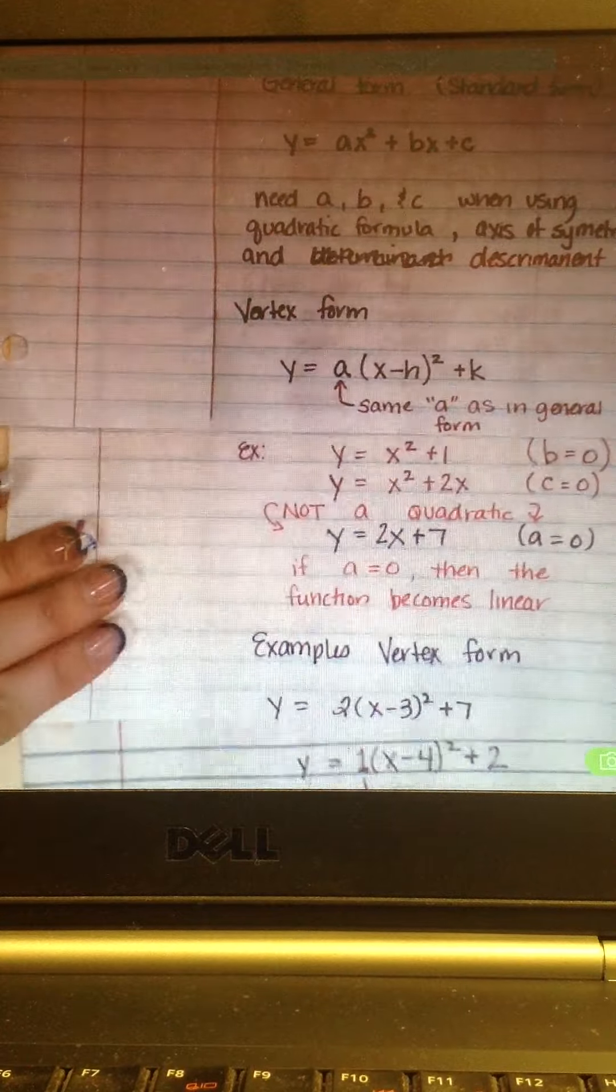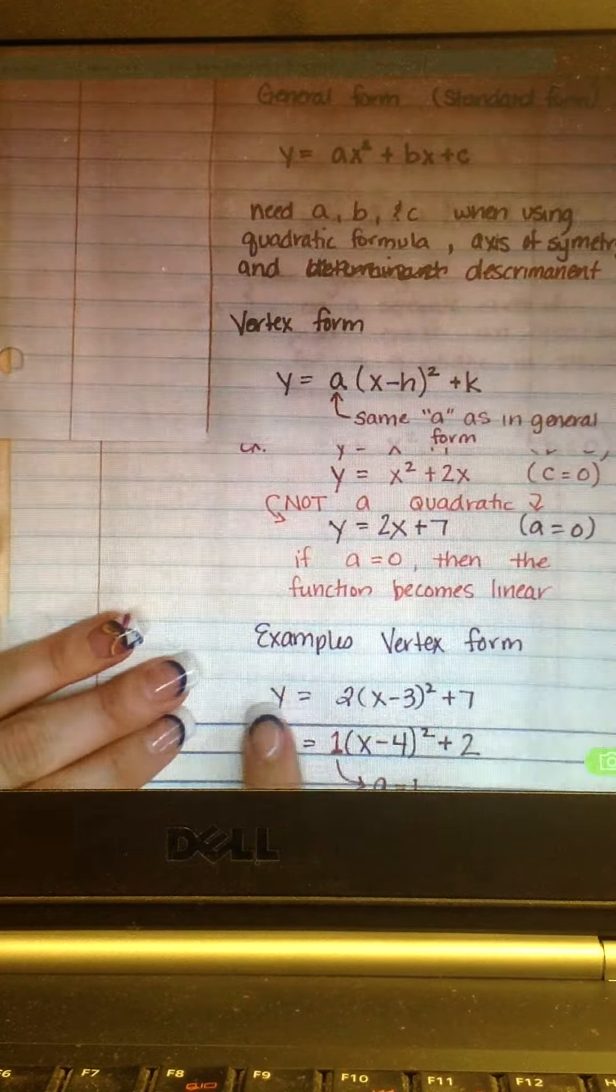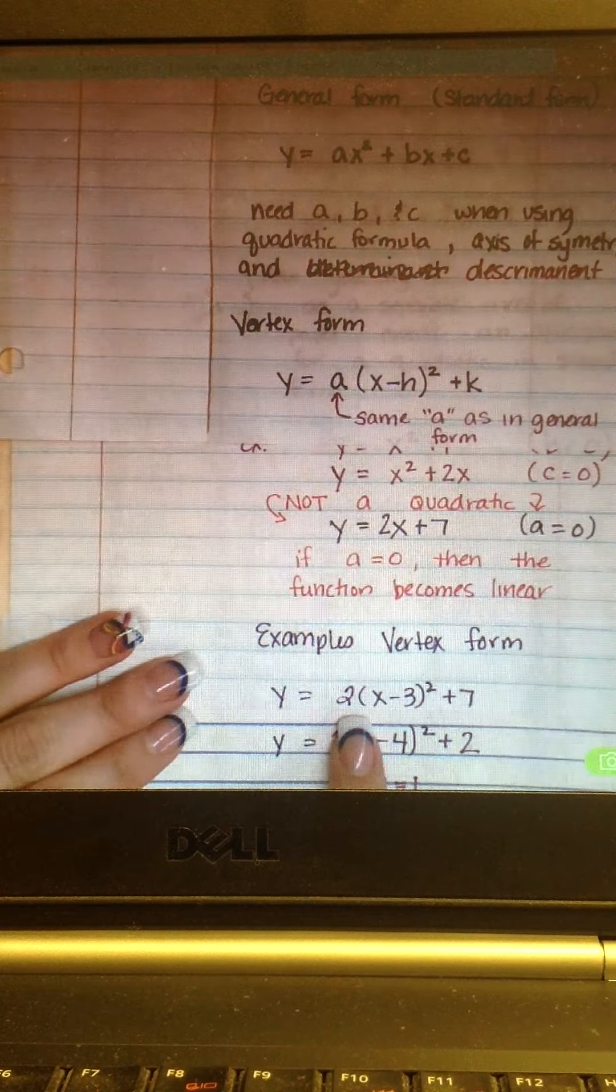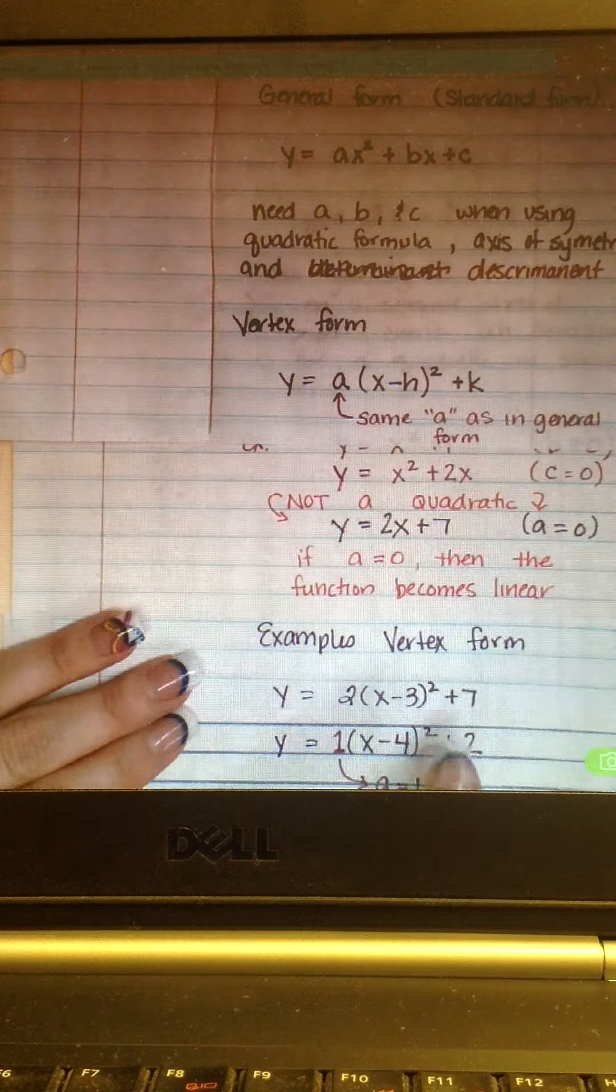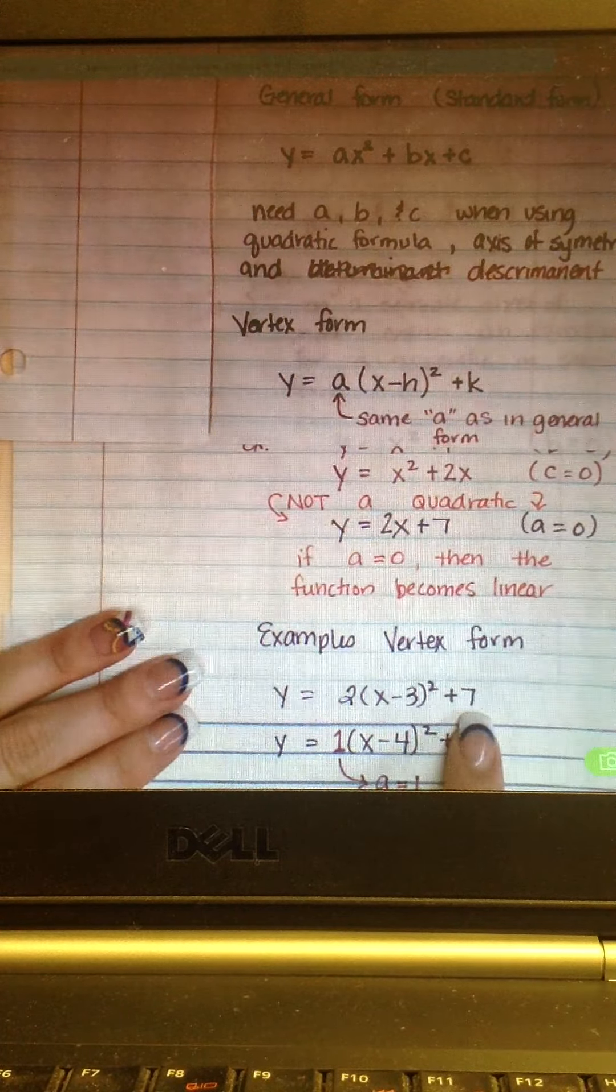So, some examples of what they'll look like in vertex form. Y equals 2 times x minus 3 squared plus 7. That's an example of vertex form. Your vertex here would be 3, 7.